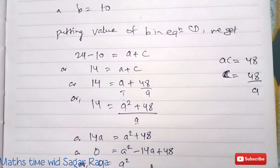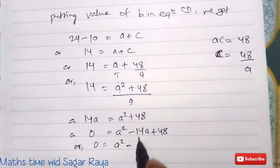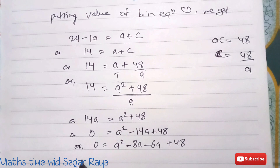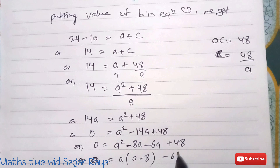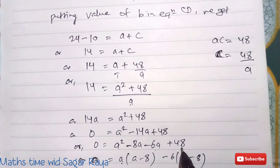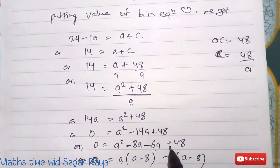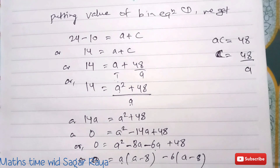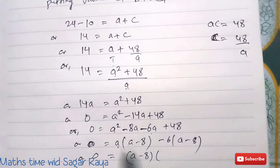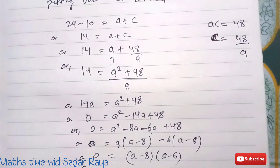To factorize a² − 14a + 48, we need two numbers that multiply to 48 and add to 14: those are 8 and 6. So: a² − 8a − 6a + 48 = 0, giving a(a − 8) − 6(a − 8) = 0, therefore (a − 8)(a − 6) = 0.